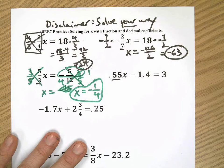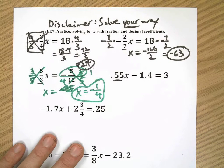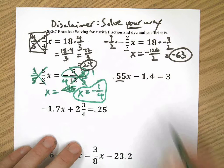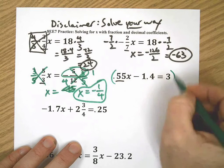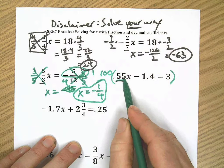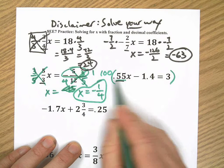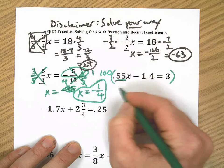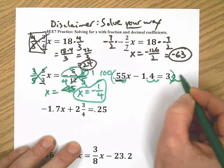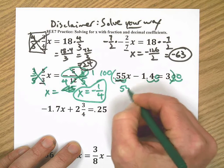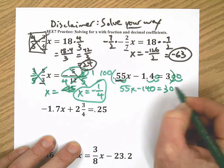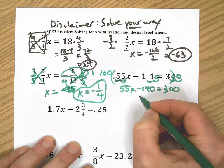I kind of like the green, I'm going to stick with it. Here, one method we've learned for dealing with decimals is, well you can not deal with them at all and just solve this problem, but something we learned is if you multiply all terms by the greatest decimal place value, in this case hundredths, so I'm going to multiply by 100. It gets rid of all the decimals, it moves it over in this case two spots for each one. So I'm going to end up with 55x minus 140 equals 300.